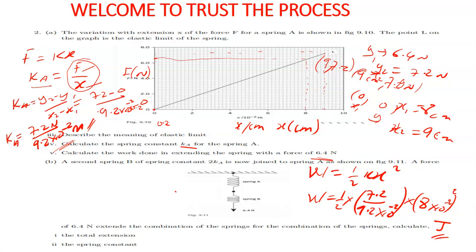Springs can be arranged in two ways: series connection and parallel connection. Let me talk more about the two types of arrangements. What must you know about the series connection of springs?